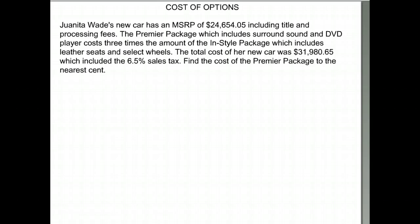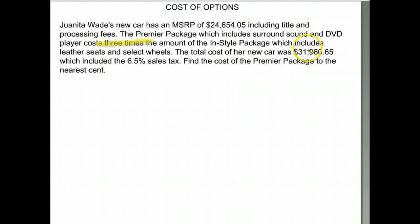The premier package, which includes surround sound and DVD, costs three times the amount of the in-style package, which includes the leather seats and select wheels. The total cost of her car was thirty one thousand nine hundred and eighty dollars and sixty five cents, and that included a six point five percent sales tax. Find the cost of the premier package to the nearest cent.